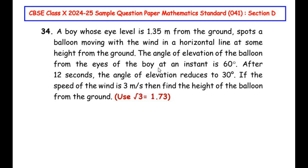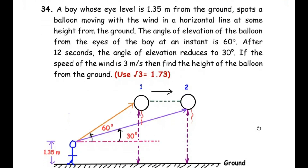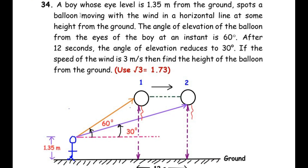Let us understand this question using a rough figure. Here we have drawn a person whose eye level from the ground is 1.35 meters. He is looking at a balloon flying in the air — the first position of the balloon is marked. The line of sight is the line going straight from the person's eyes. Since the person is looking upwards from the line of sight, that angle is called the angle of elevation — in this case, 60 degrees.